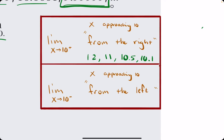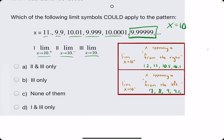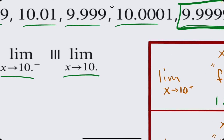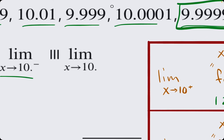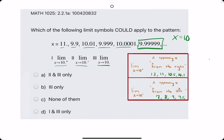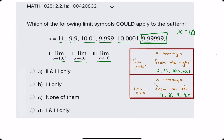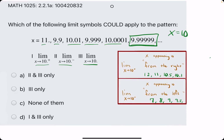Approaching 10 from the left could be like 7, 8, 9, 9.5, 9.9 — you get the idea. So approaching 10 from the left is 10 with the minus sign. And then the limit as x approaches 10 means just approaching 10 from both sides.